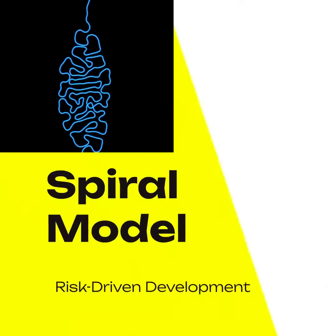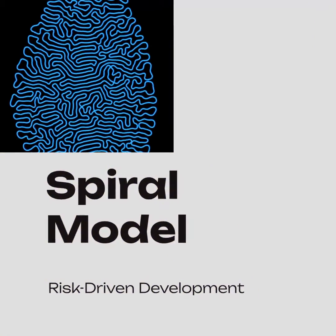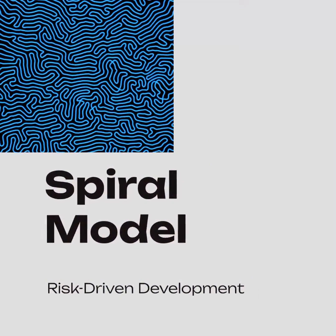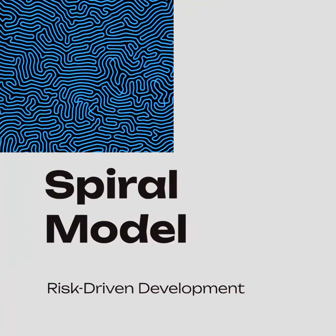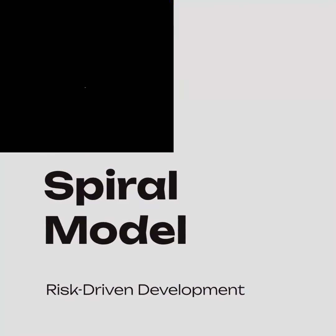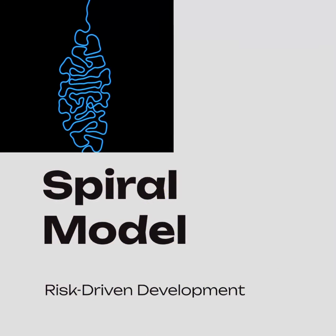On the other hand, the Spiral Model is a risk-driven development process. It focuses on managing risks through iterative development cycles, allowing for early identification and mitigation of potential issues.